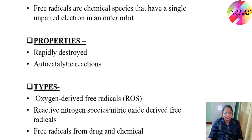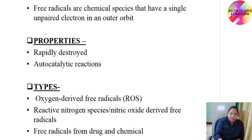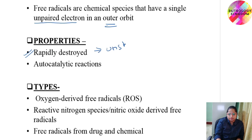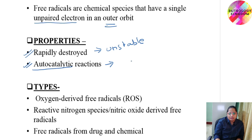What are free radicals? Free radicals are chemical species that have a single unpaired electron in an outer orbit. They are normally unstable and are rapidly destroyed. In autocatalytic reactions, when free radicals come in contact with or react with another molecule, they convert that molecule into a free radical. This process is known as an autocatalytic reaction.